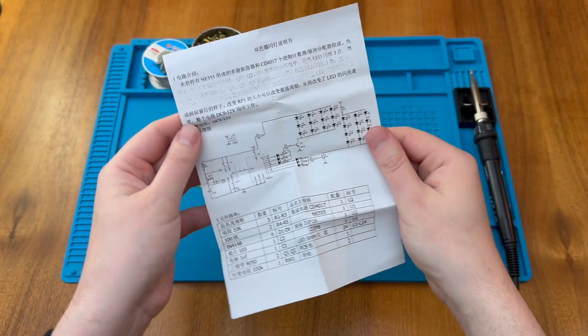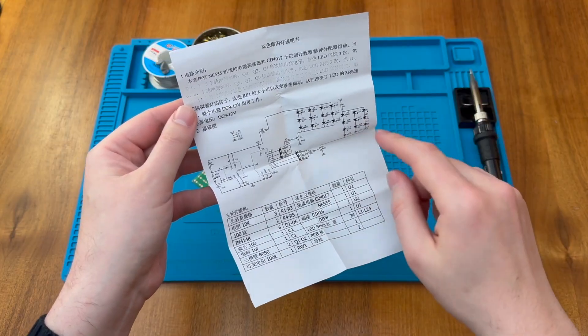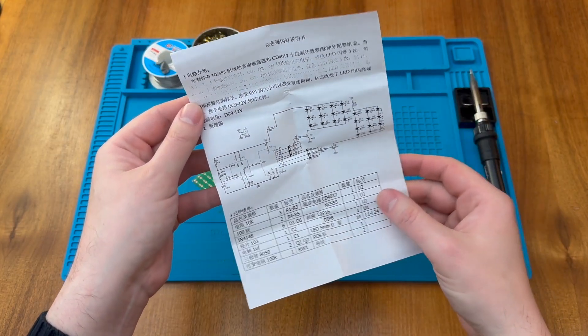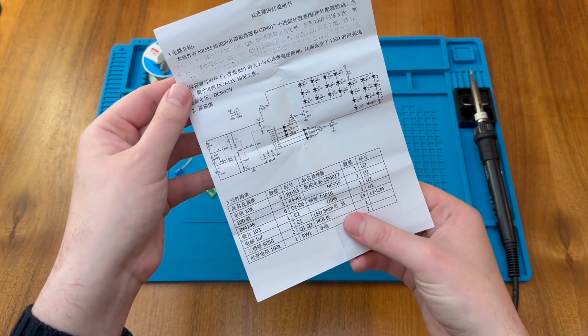Inside the kit we have an instruction sheet as normal. Something I can't quite read, but important information here around the voltage that will be required to power the kit once we get started. There's also some indications of the various components, and we will see those as we go through.